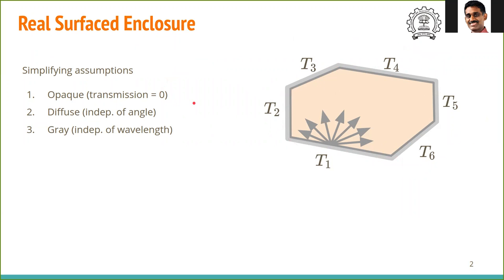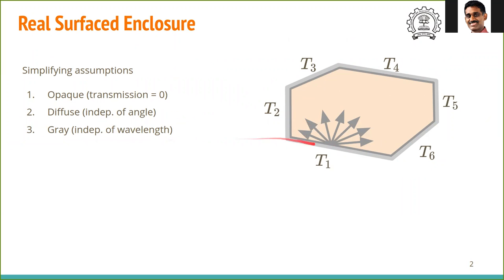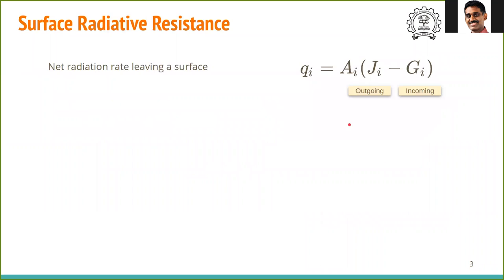We are going to make approximations that each of these surfaces is opaque, essentially meaning the transmission is zero. The radiative properties of the surface are diffuse, meaning none of them are dependent on angle. And lastly, it is gray — the properties of emissivity, absorptivity, and reflectivity are not a function of wavelength. Under these circumstances, we can make some simplifying calculations.